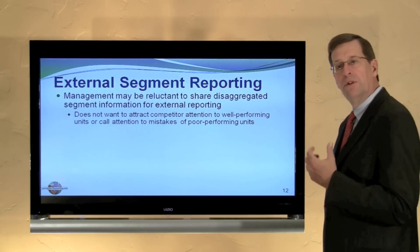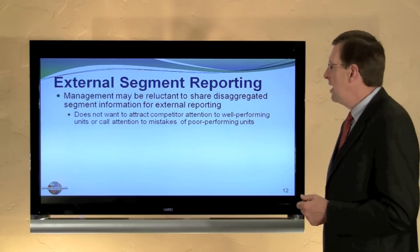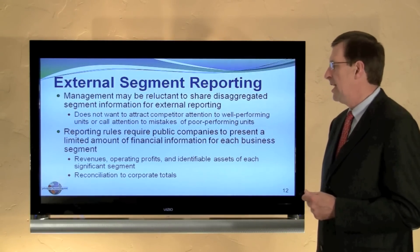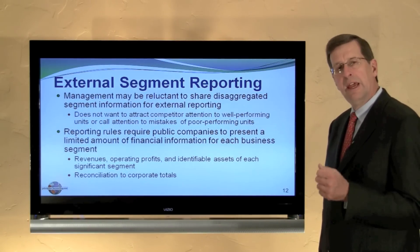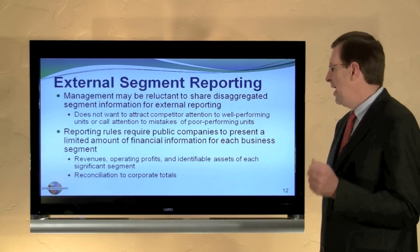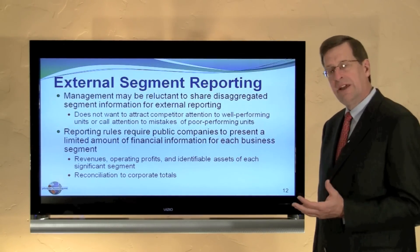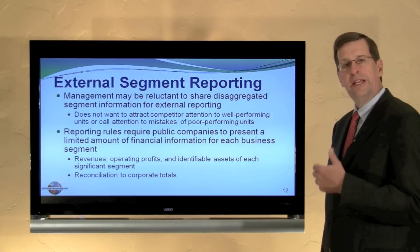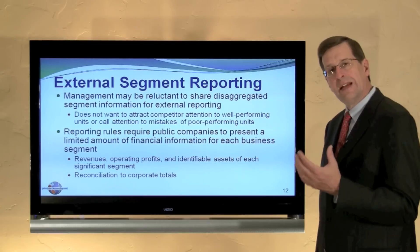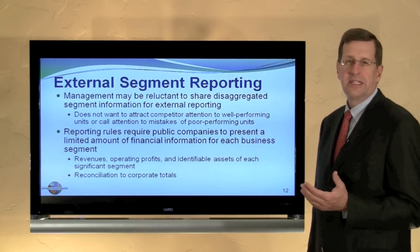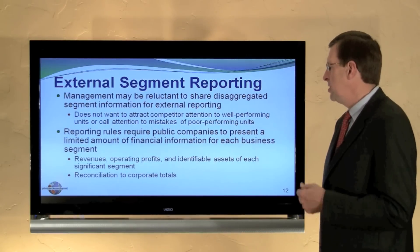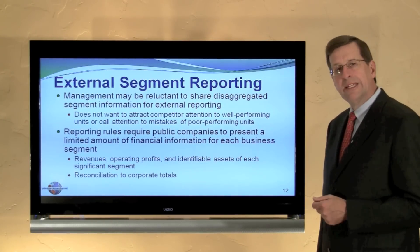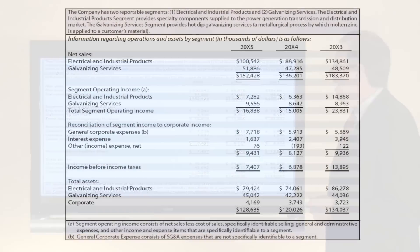That's why GAAP requires full disclosure about certain segment information. The reporting rules require public companies to present a limited amount of financial information for each business segment — generally revenue, income, and identifiable assets in use by each significant segment. There are specific mathematical tests, generally 10% type tests, for determining when a segment's revenue, operating profits, or assets are significant relative to the total organization. There's also a reconciliation of the corporate totals.